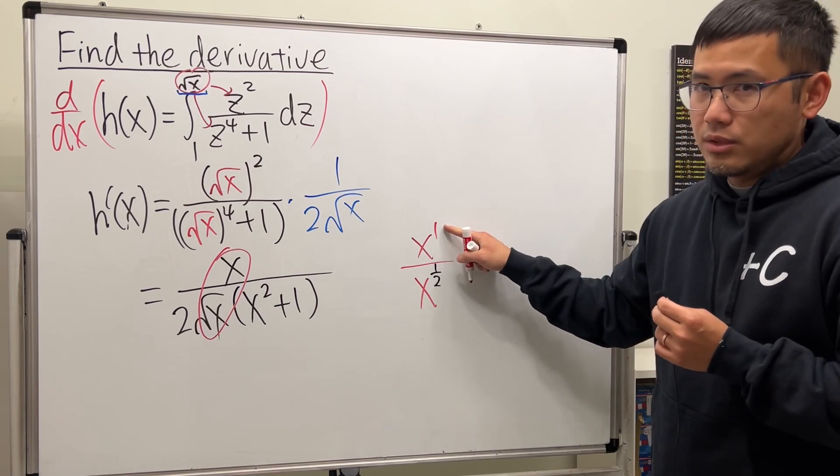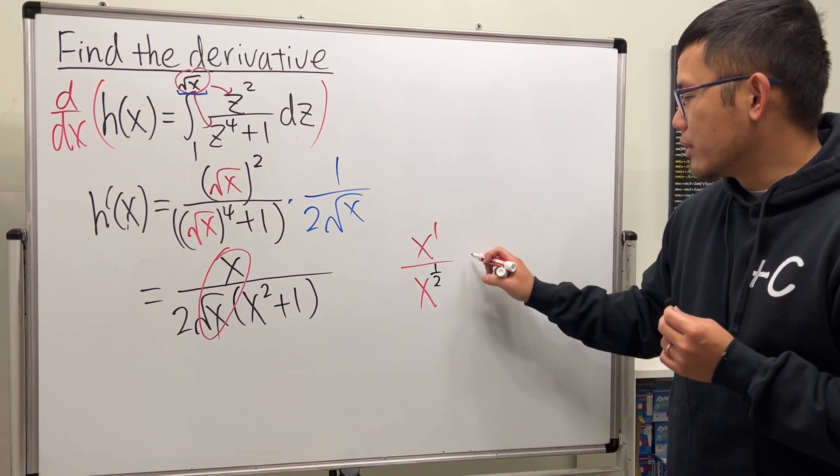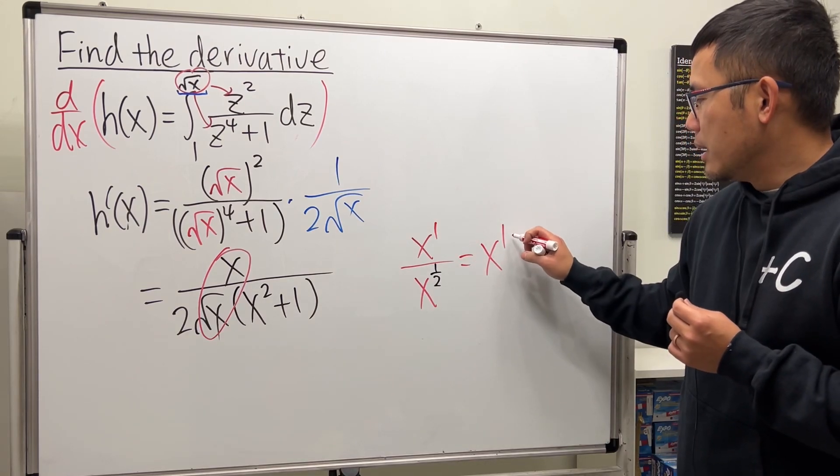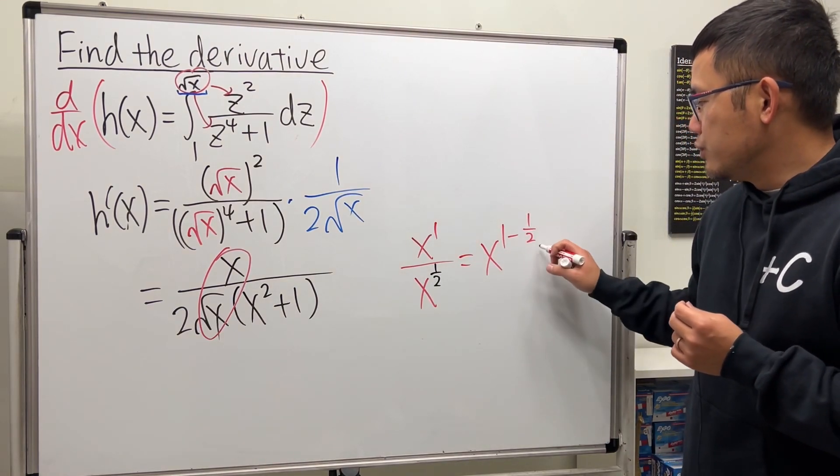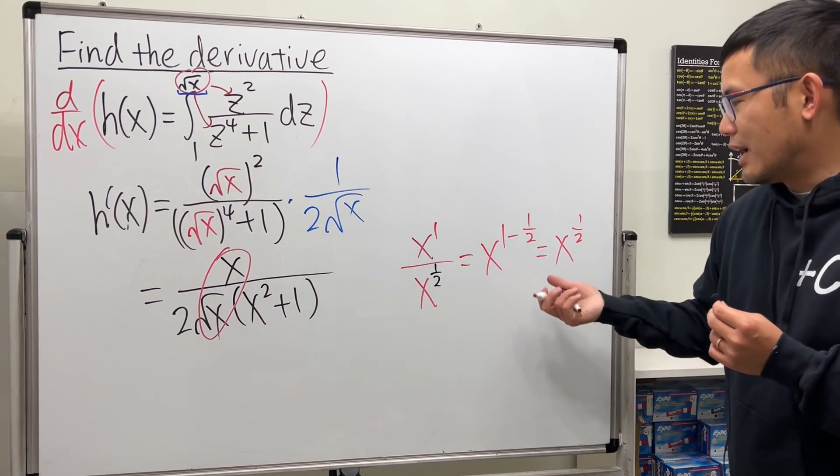So this is to the first power. So just do 1 minus the power. So this is x to the 1 minus 1 over 2, which you get x to the positive 1 over 2. So you have square root of x.